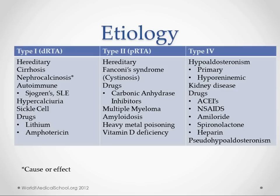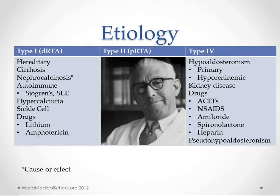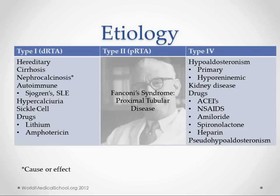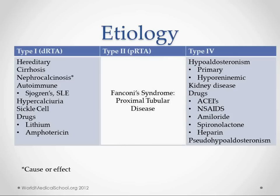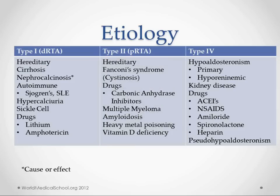Type 2 can also be hereditary, and the one thing you want to associate with it is Fanconi syndrome — not Fanconi's anemia, let's keep those two terms straight. Fanconi syndrome is named after Guido Fanconi, and it's a disease of the proximal tubules — really any dysfunction of the proximal tubules, which is where type 2 occurs. Other causes include drugs like carbonic anhydrase inhibitors, amyloidosis problems like multiple myeloma, heavy metal poisoning, and vitamin D deficiency.